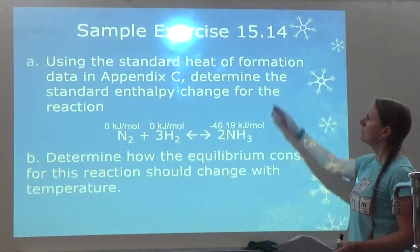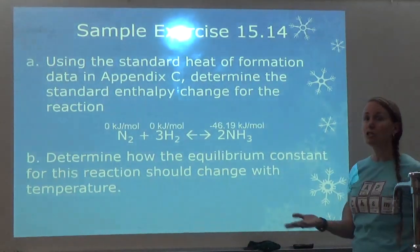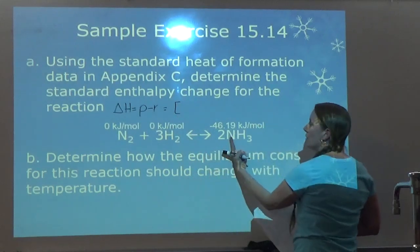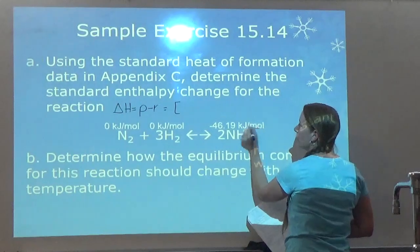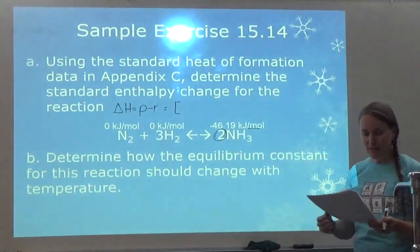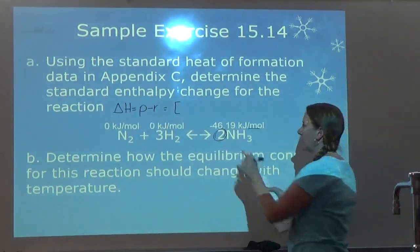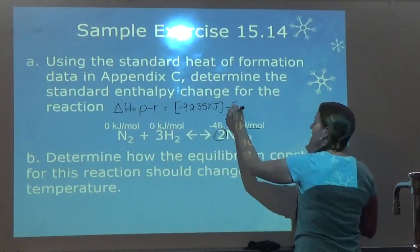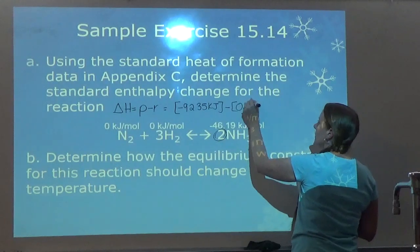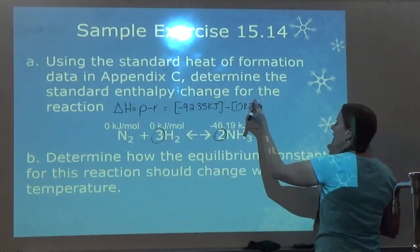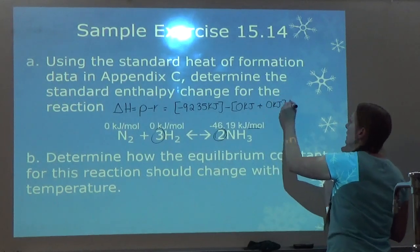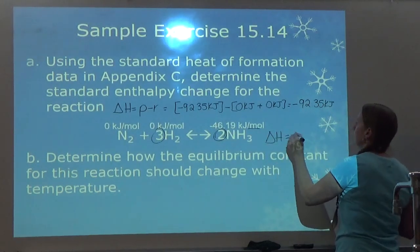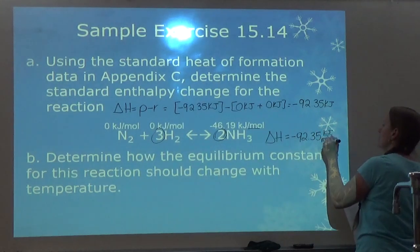It says: determine the standard enthalpy change for the reaction. Delta H is products minus reactants. Starting with products: negative 46.19 kJ/mol times 2 gives negative 92.38 kJ. Then I subtract the reactants: zero for N2 and zero times three for H2, which is still zero. So delta H equals negative 92.38 kilojoules per mole of reaction.